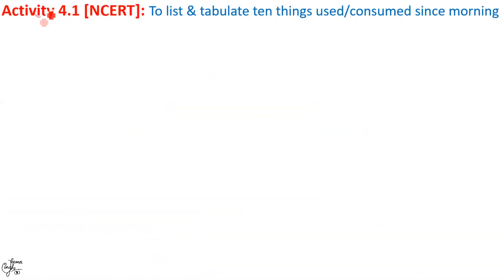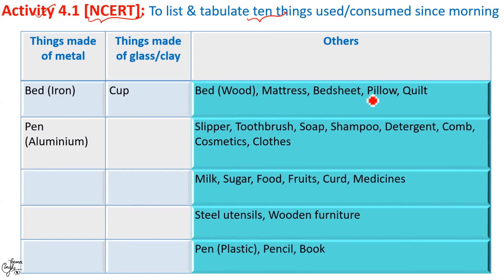For this activity given in NCERT, you need to make a quick list of 10 things you have used or consumed since morning. Basically, the idea is to list out the things we use in day-to-day life and then tabulate them under the following headings: things made of metal, things made of glass or clay, and things that are made up of other materials. An item you choose may belong to more than one heading too.